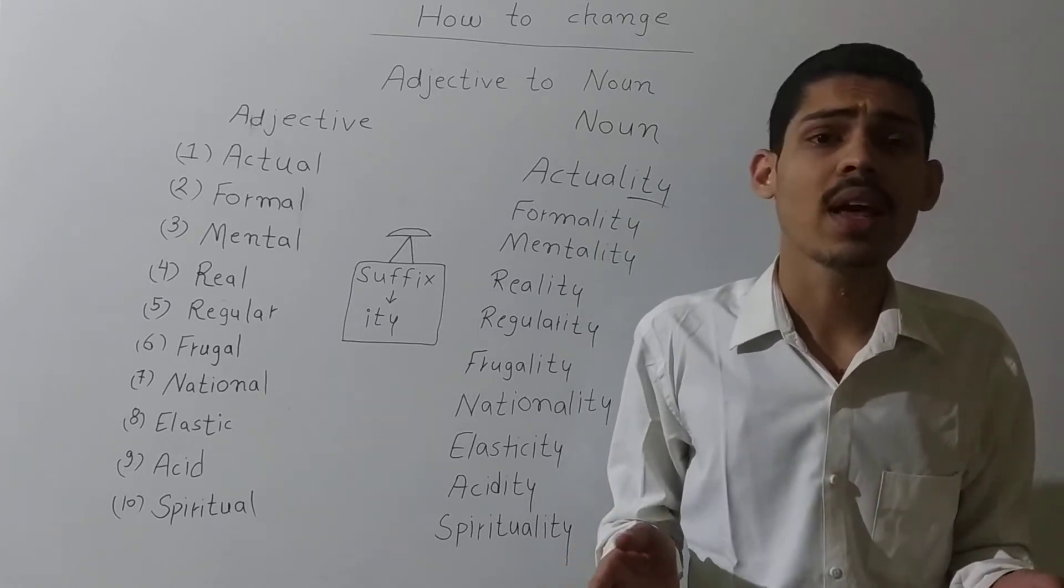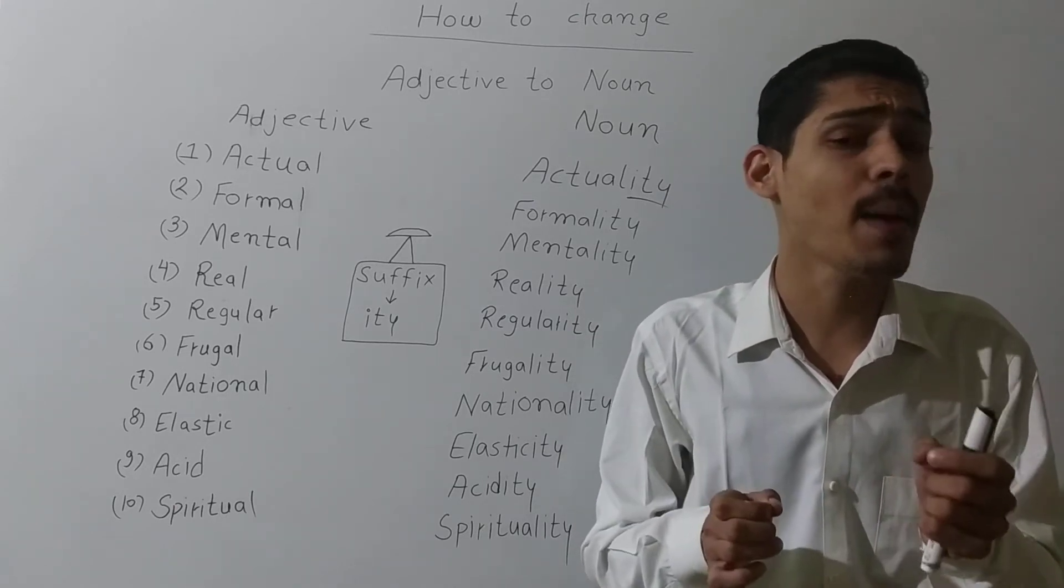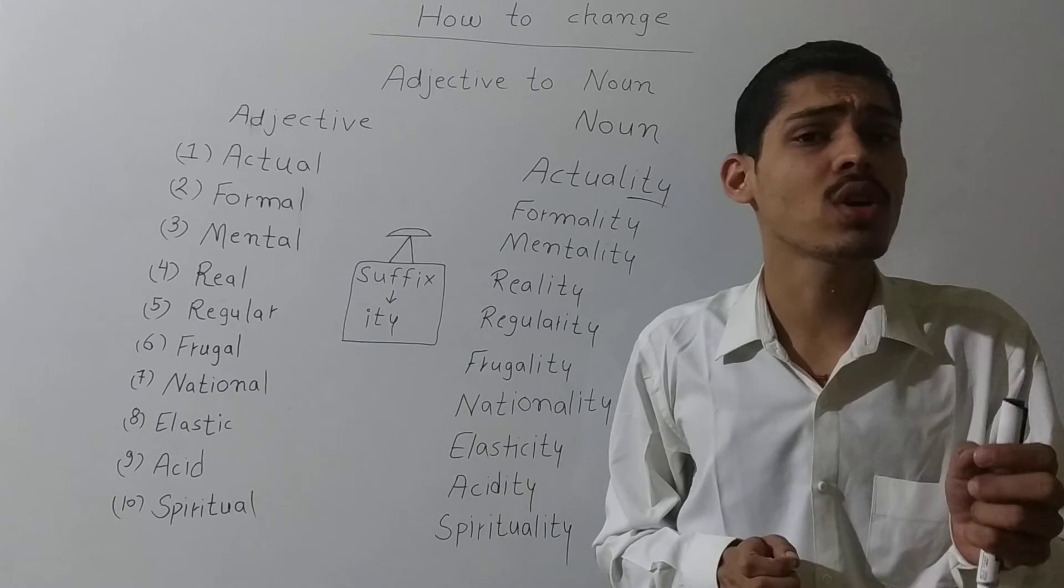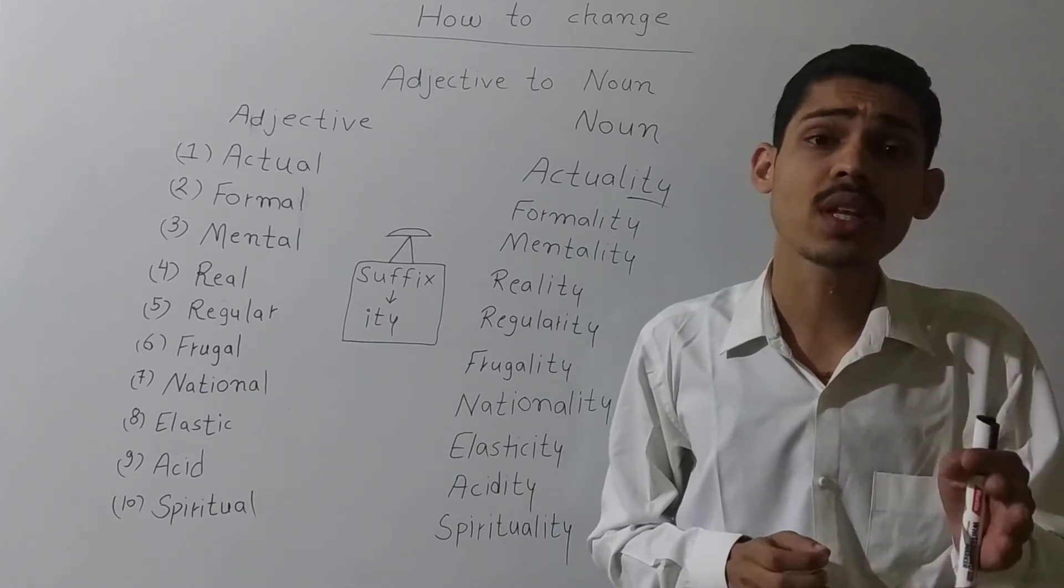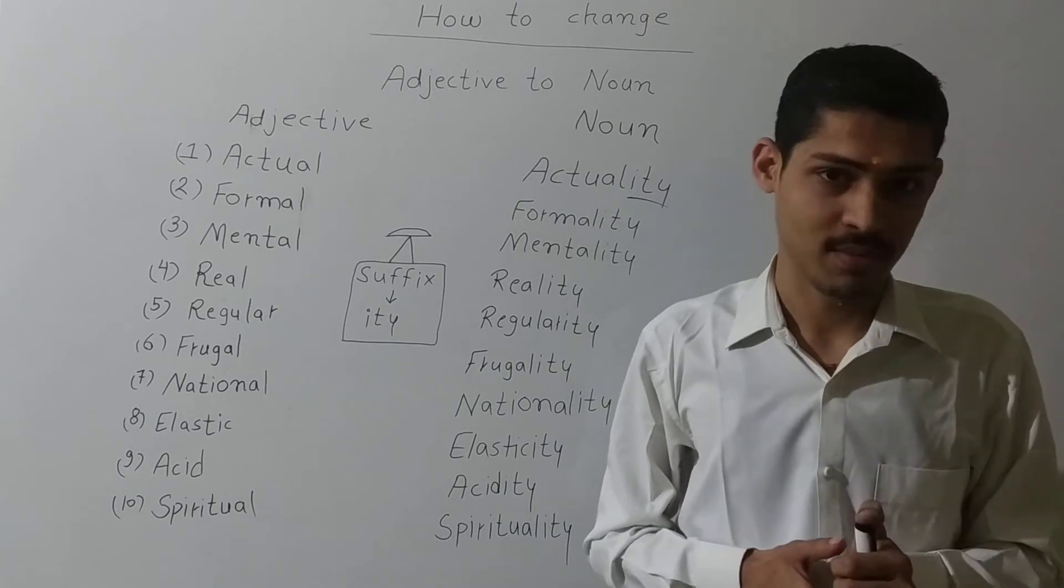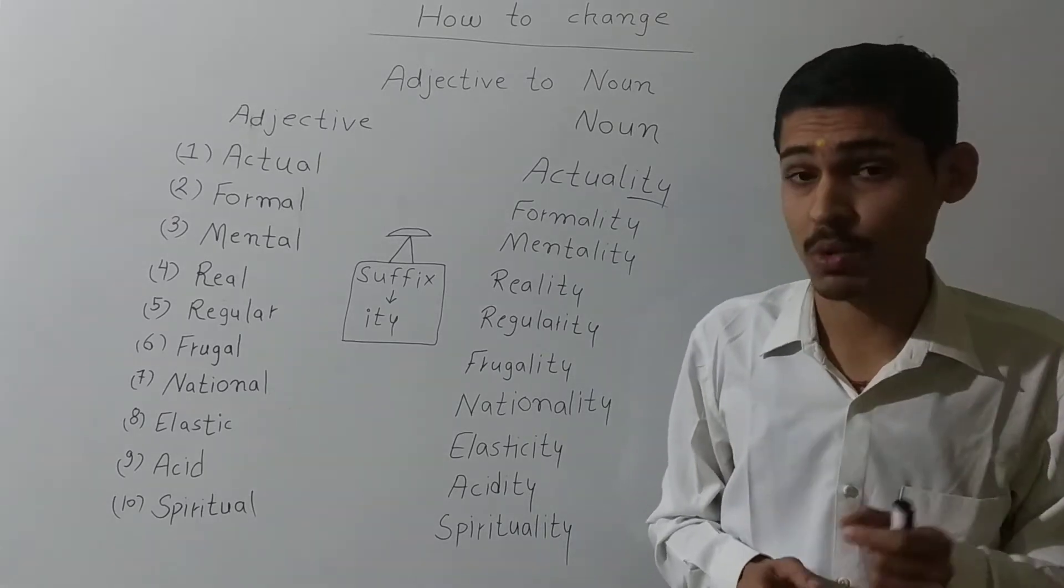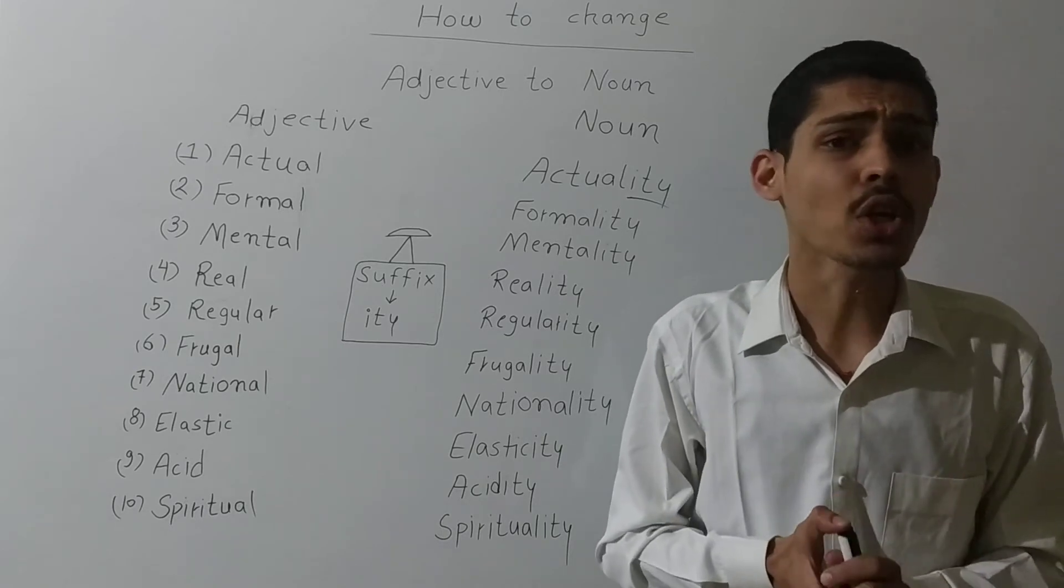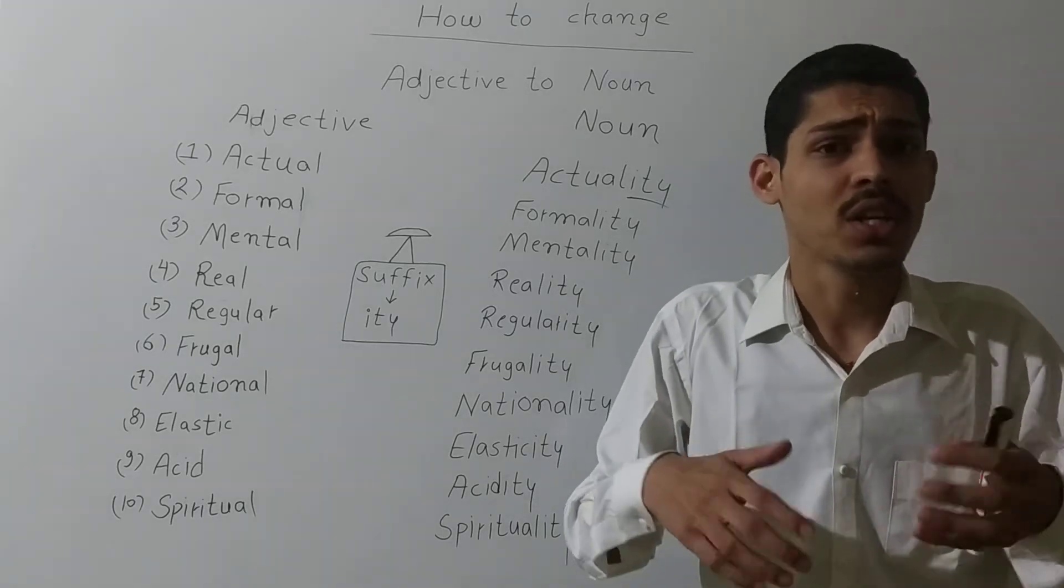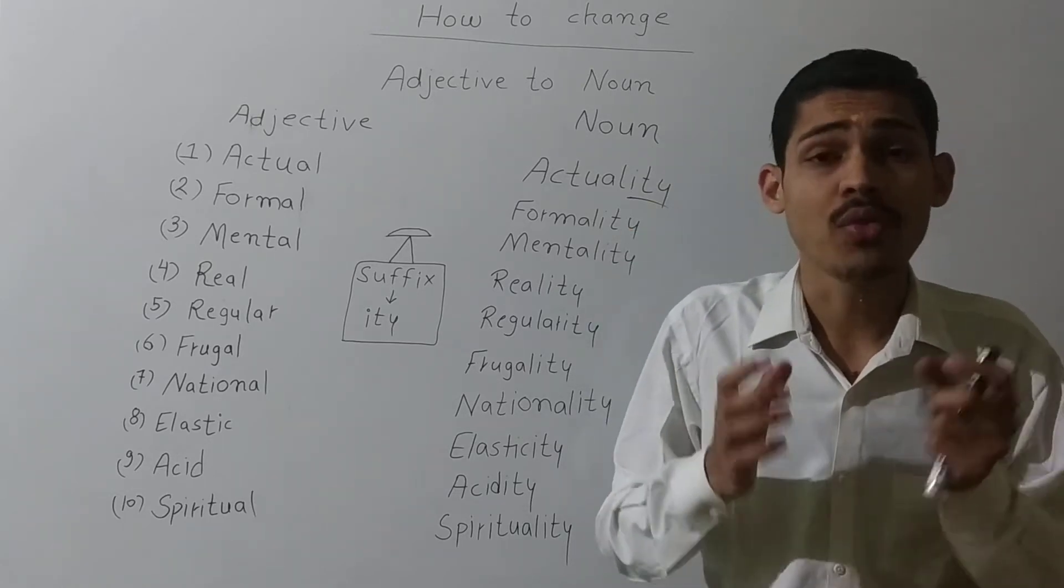For example, if I say Ram is a good boy, here I am going to talk about Ram and I am showing the quality of Ram. How is Ram? Good boy. Ram is a good boy. So good is an adjective. Adjective shows the quality of noun.